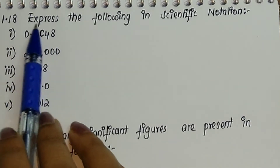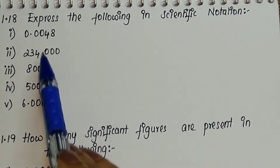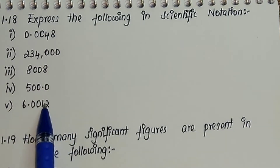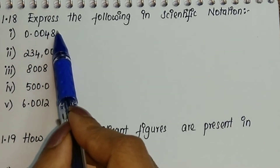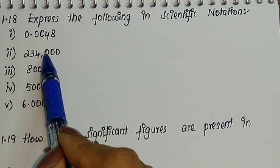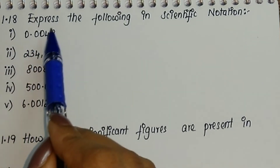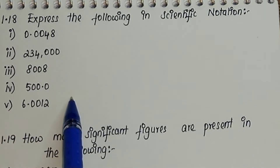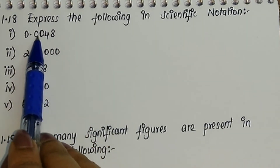Question 1.18 asks us to express the following in scientific notation — five questions are given. Remember: when we move the decimal towards the right you get a negative power, and when you move the decimal towards the left it's going to be a positive power. Keeping that in mind, we'll write down the answer for each.